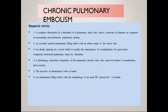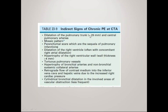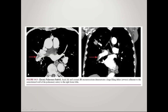In chronic pulmonary embolism, there is complete obstruction by thrombus causing a decrease in diameter of the pulmonary artery compared to surrounding non-obstructed pulmonary arteries. It presents as an eccentric partial intraluminal filling defect with an obtuse angle to the vessel wall. In contrast to acute pulmonary embolism where there is dilatation of the vessel and the thrombus forms acute angles with the vessel wall, in chronic embolism the vessel diameter decreases and the thrombus forms an obtuse angle to the vessel wall. CT images of chronic embolism can be seen here.